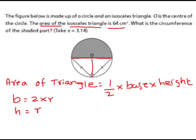Now we substitute this value into the formula. So half into base is 2r, height is r. When we simplify, half of 2r would be r into another r. So area of triangle is r squared. So r squared equals 64, so r is 8.